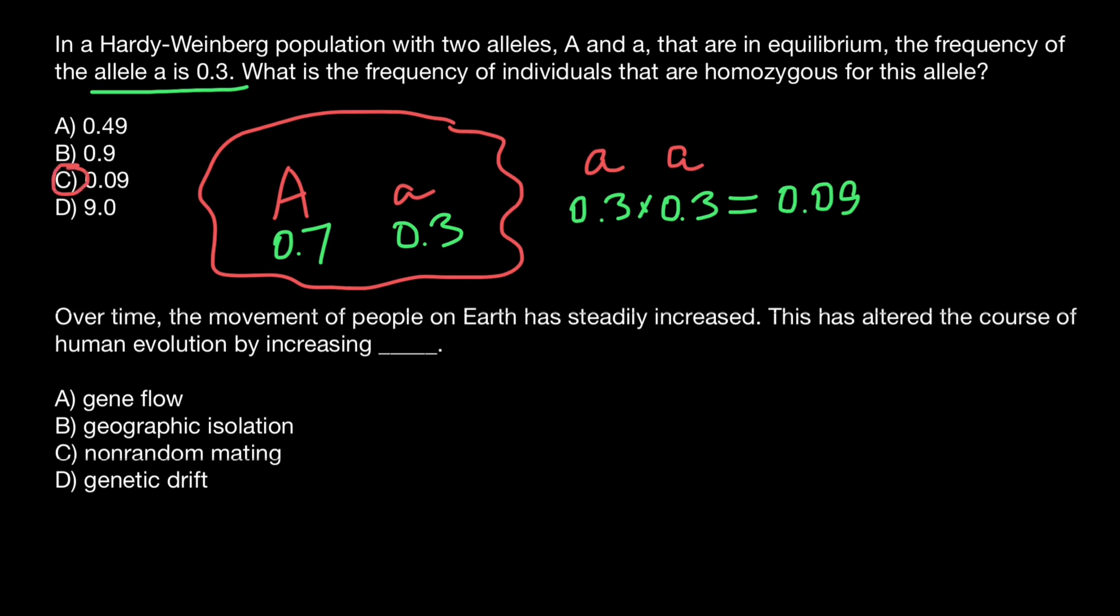And by the way, do you know the frequency of the heterozygous genotype, which is capital A and small a? Some of you might say that the frequency is going to be 0.7 times 0.3, and this is going to be 0.21. But this is not true.